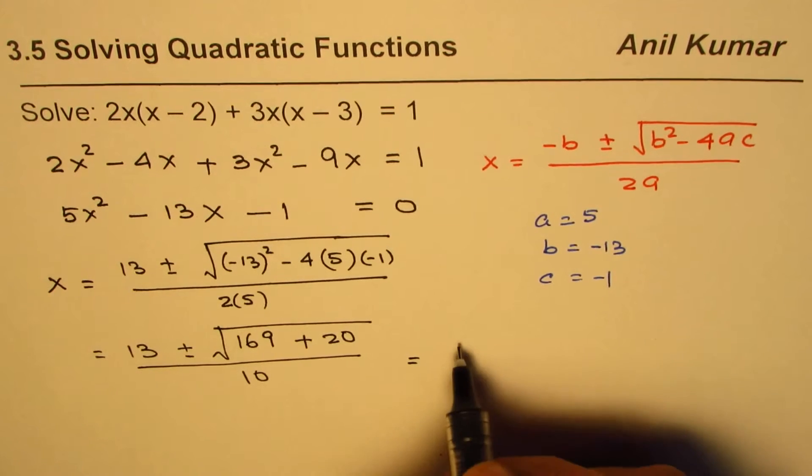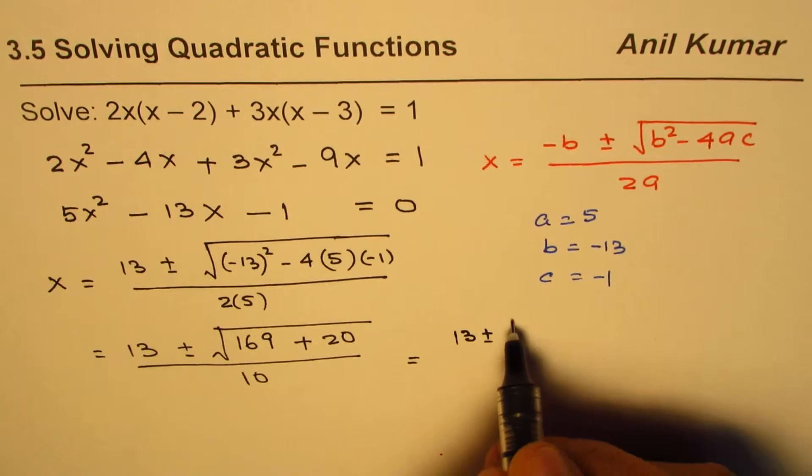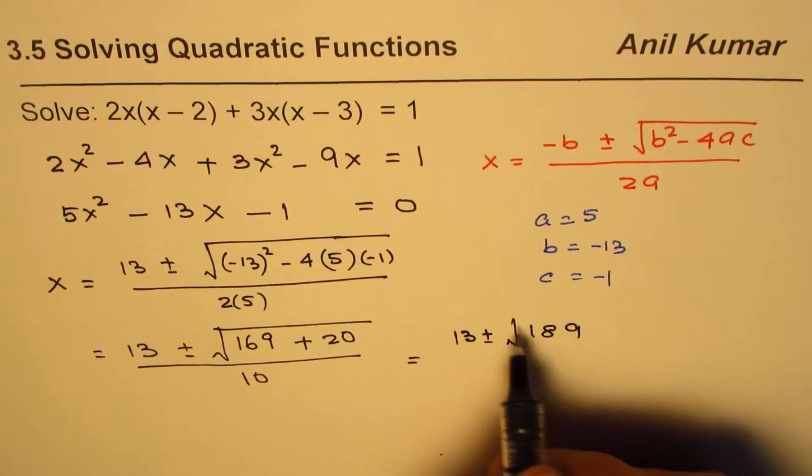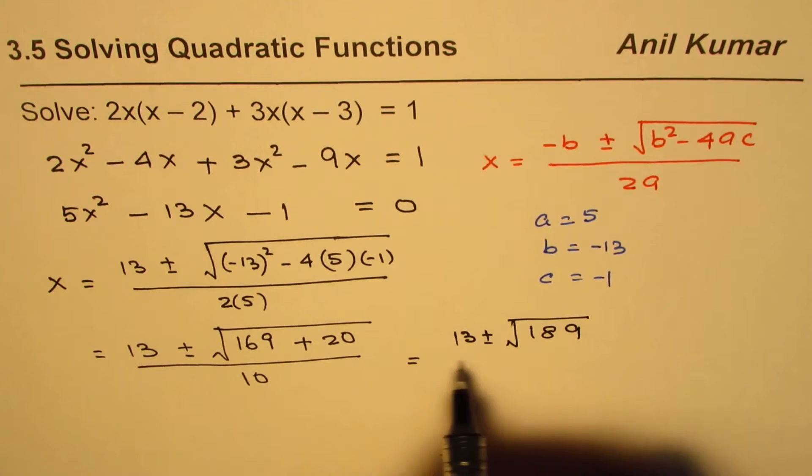Now, this could be written as 13 plus or minus square root of 189, divided by 10.